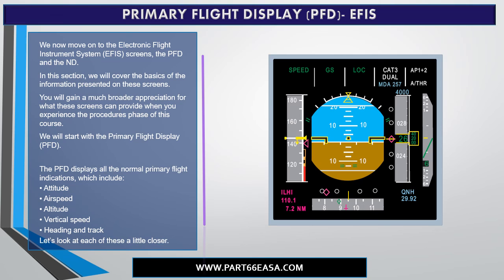We will start with the PFD. The PFD displays all the normal primary flight indications, which include attitude, airspeed, altitude, vertical speed, and heading and track. Let's look at each of these a little closer.